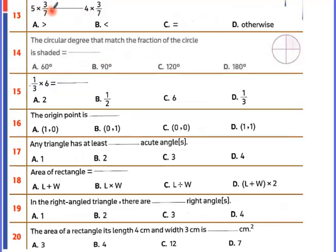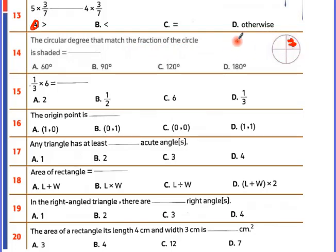Five times 3 over 7, and four times 3 over 7 — multiply the numerator. For the circular degree that matches the fraction of the circle that is shaded: it's a quarter circle, so that equals 90 degrees. Simplified: divided by 3 gives 1, divided by 3 gives 2, so the answer is 2.